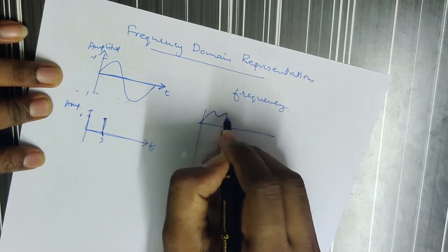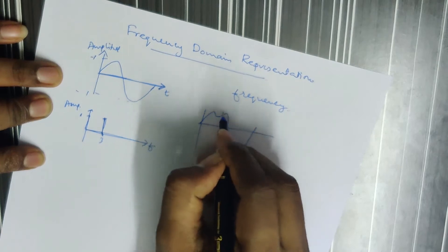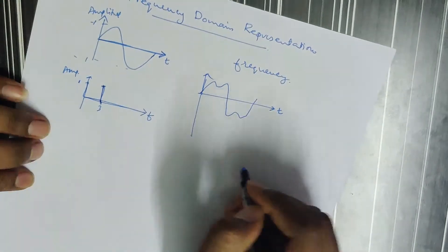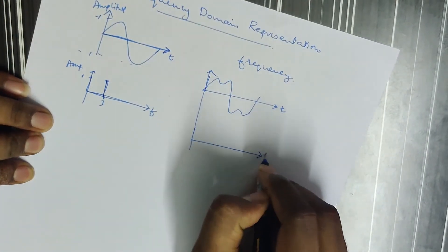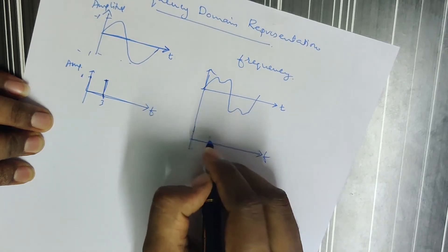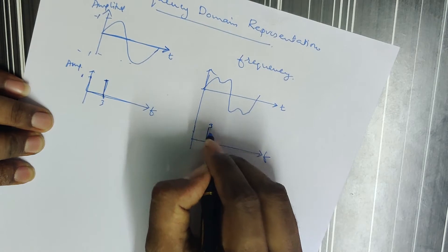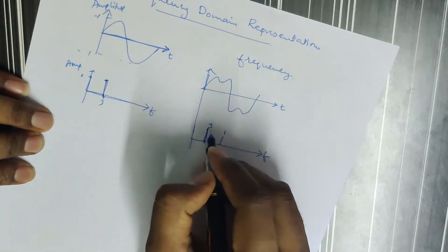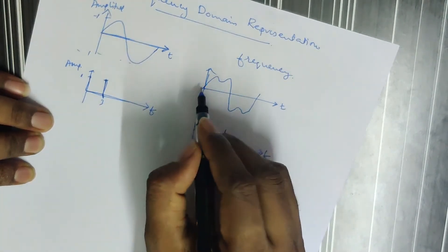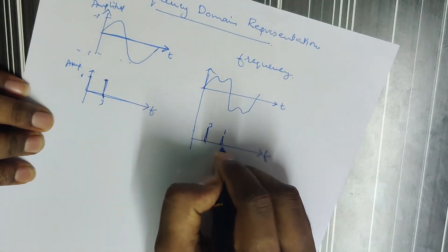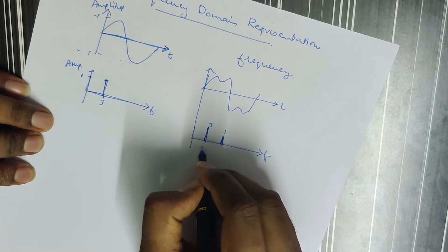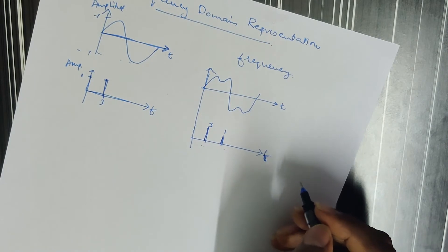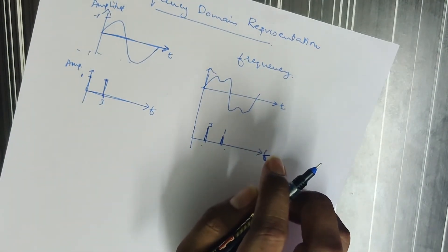Suppose there will be two frequency components. The first one is 3 and the second one is 1 or 1.5 — that is, the first signal frequency plus the second signal frequency. So there will be two frequency components in this particular signal represented in the frequency domain.